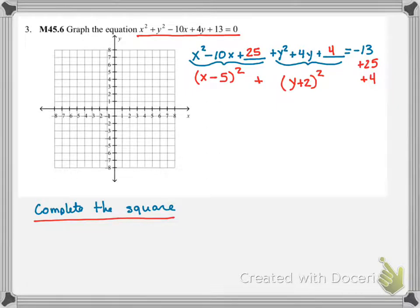25 plus 4 is 29, and 29 minus 13 is going to give us 16.